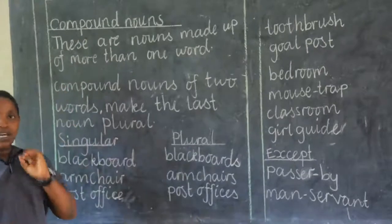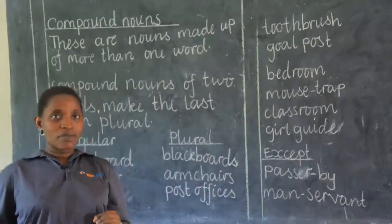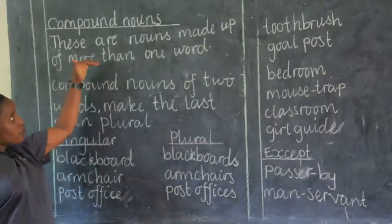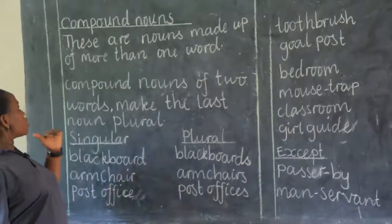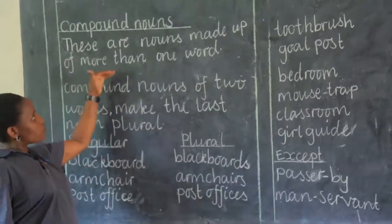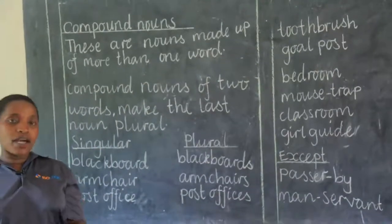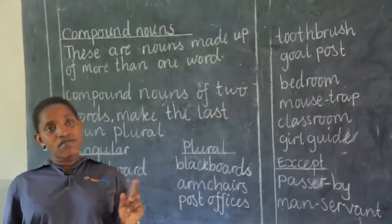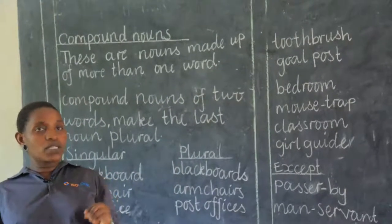Compound nouns are still common nouns, but we call them compound. Why? Because these are nouns made up of more than one word — that means two, three, or more. Those are what we call compound nouns.